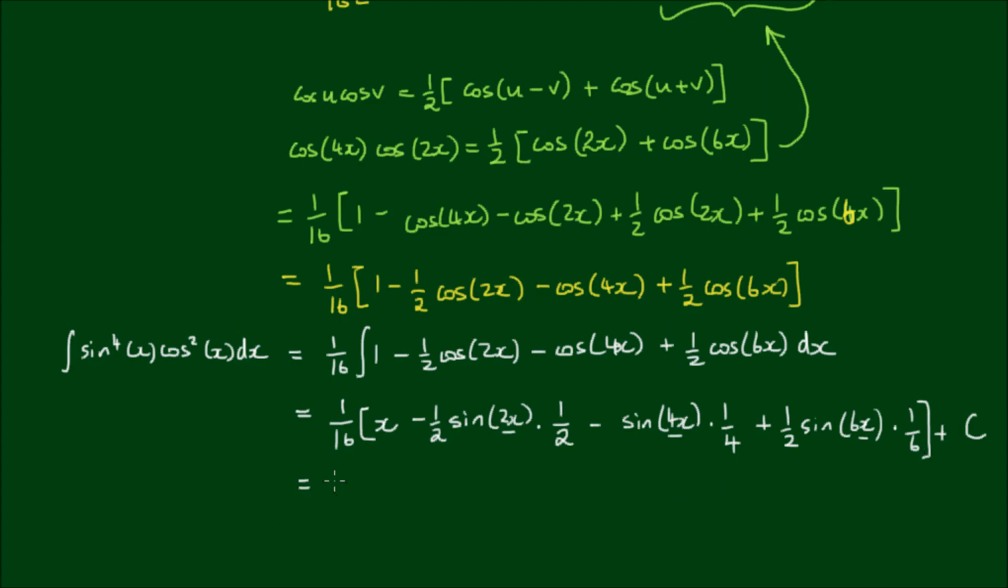So tidying up this result, we have x on 16, minus 1 half times 1 half is 1 quarter, by 1 on 16 is equal to 1 on 64, so we have sin of 2x on 64, minus sin of 4x on 64, 1 half times 1 sixth is equal to 1 twelfth, times 1 sixteenth is equal to 1 on 192 plus sin of 6x on 192, plus the integration constant, c.